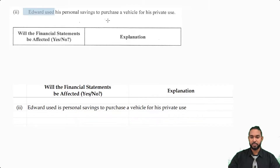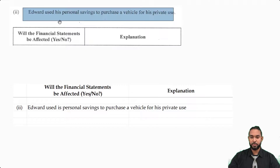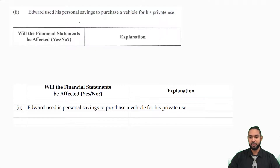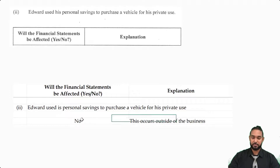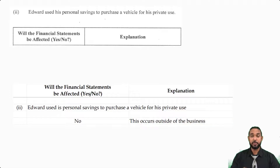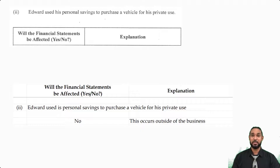The second transaction: Edward used his personal savings to purchase a vehicle for his private use. The answer is no — this will not affect the financial statements because this occurs outside of the business. Edward, the owner, is using his personal funds to buy something for himself. He's not using business funds and whatever he's buying is not going into the business, so it's not affecting the business at all.